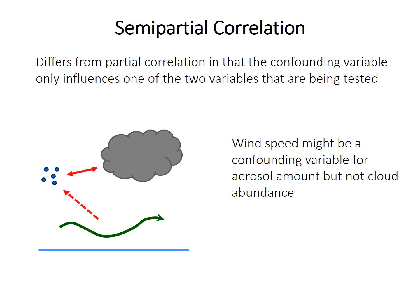Partial correlation is the more commonly used of the two methods. There's also something called semi-partial correlation, and it is quite similar. The only difference is that the confounding variable is thought to influence only one of the two main variables, not both. So perhaps wind speed affects aerosol amount but not cloud abundance. In that case, we could run a semi-partial correlation to assess the correlation between aerosols and clouds while accounting for the confounding effect of wind speed on aerosol abundance only. In other words, this is testing how much aerosols add to our knowledge of cloud abundance above and beyond what we'd expect from the effect of wind speed on aerosols — do they add anything useful? That's what semi-partial correlation is basically telling us.